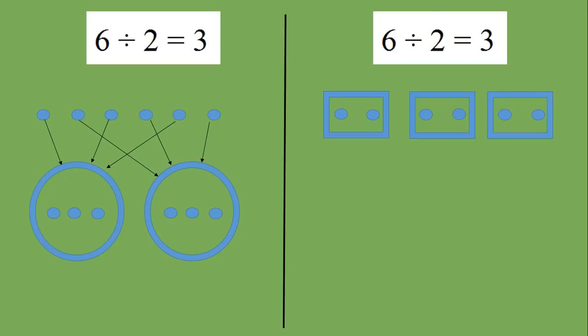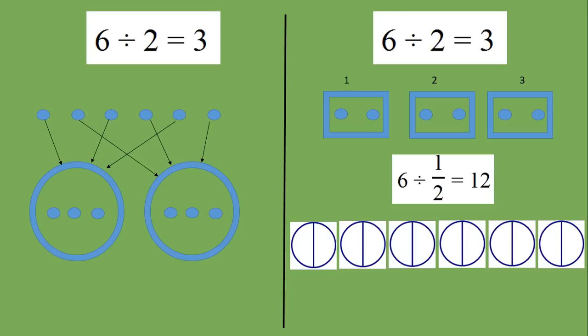The second way is to split the six into twos and then find that it divides into two three times. When divided by a fraction, six divided by a half, using this form of division, we split the six into halves and then find that it divides into half twelve times. The second form of division on the right is the way of dividing when we use the invert and multiply method.